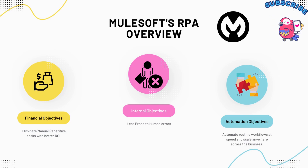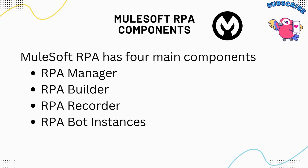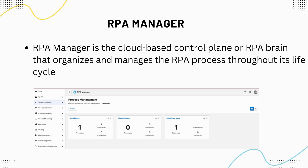Let's jump into the MuleSoft RPA components. MuleSoft RPA has four main components: RPA Manager, RPA Builder, RPA Recorder, and RPA Bot Instances. Let's dig into each of them. RPA Manager is the cloud-based control plane — you can call it the RPA brain — that organizes and manages the RPA process through its lifecycle.